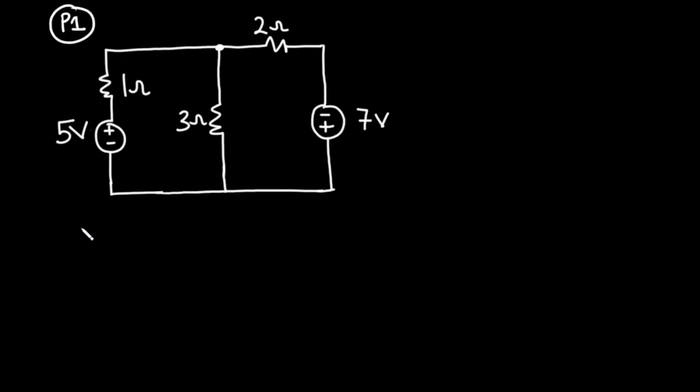In problem one we have two voltage sources: the 5 volts and the 7 volts. We also have three resistors — the 1 ohm resistor, the 3 ohms resistor, and the 2 ohms resistor. What we are going to do is find the current flowing through all parts of the circuit.